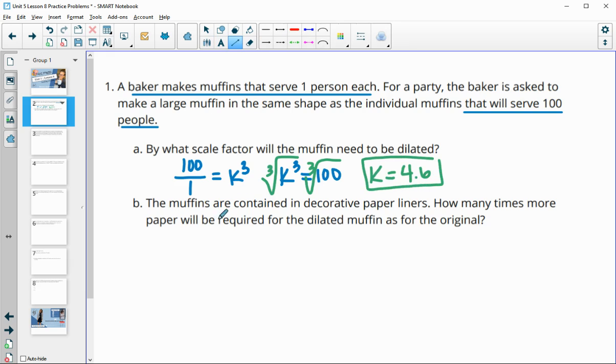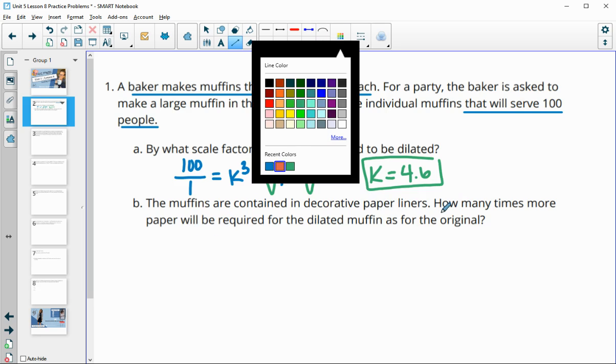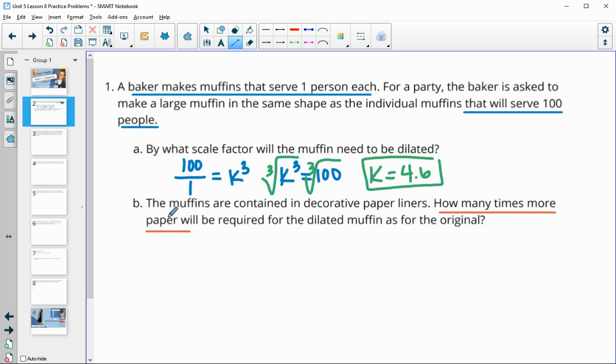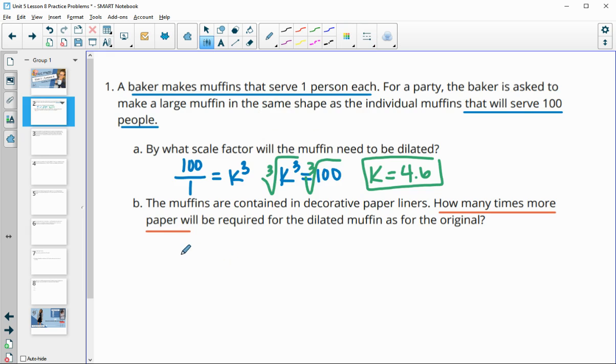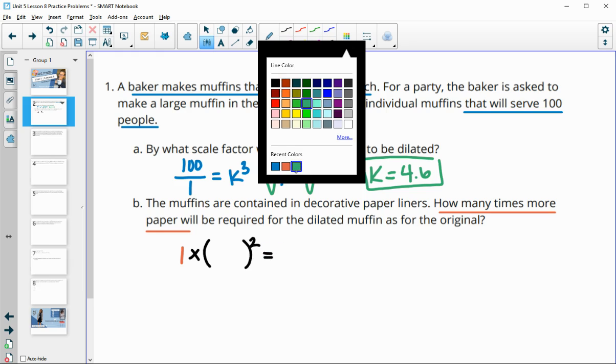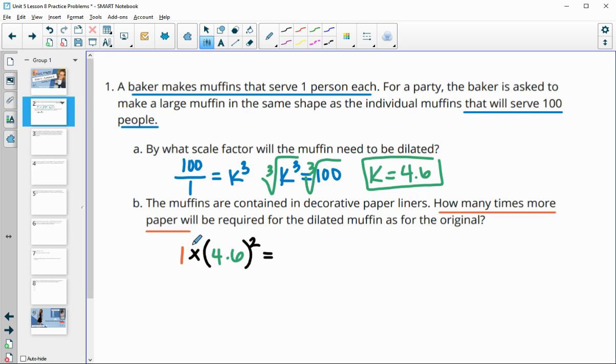Then it said the muffins are contained in decorative paper liners, so how many times more paper will be required? When we're talking about paper, that's an area measure since it's just covering the outside portion of the muffin. So we're going to multiply by the scale factor squared. We'll do one times 4.6 squared, and this will give us 21.5.